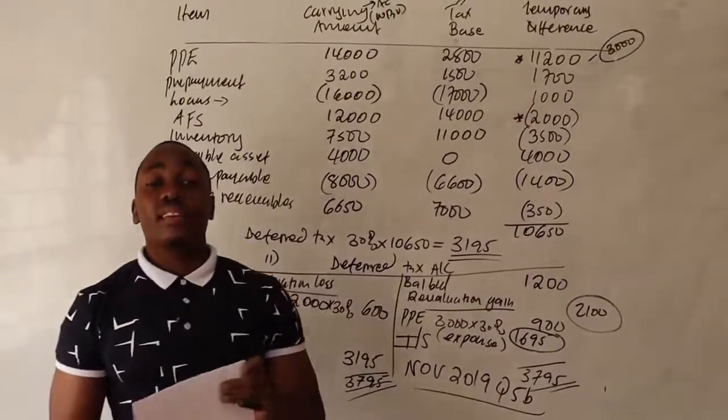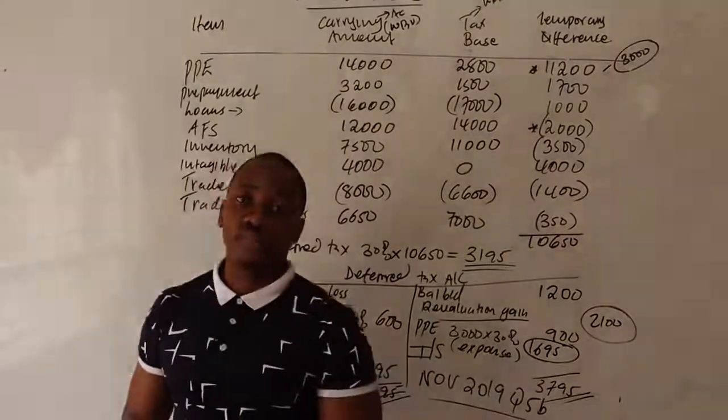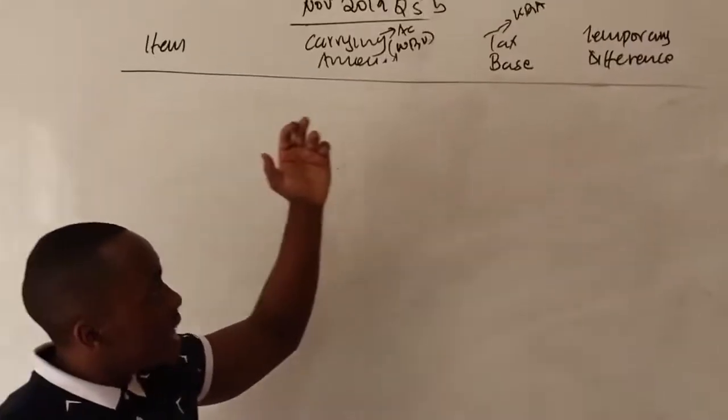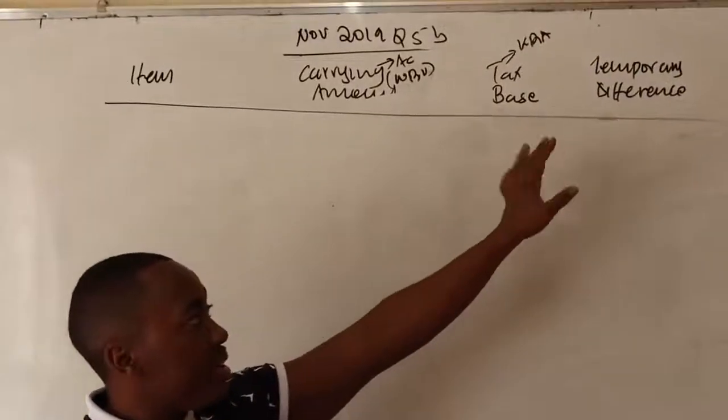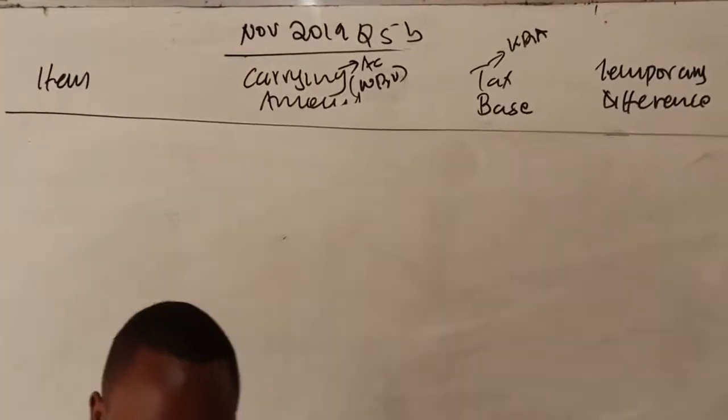Let's try another illustration — November 2019, Question 5B. When computing deferred tax, start with three key elements: item, carrying amount, tax base, and temporary difference. These are the key elements you need to compute.